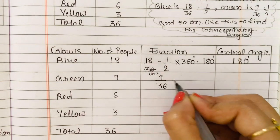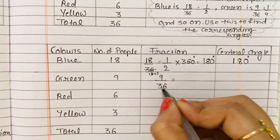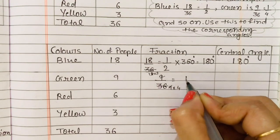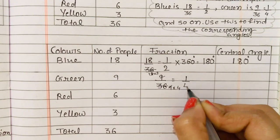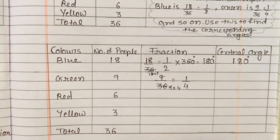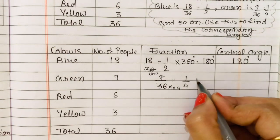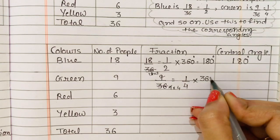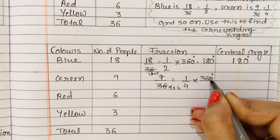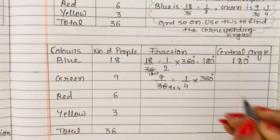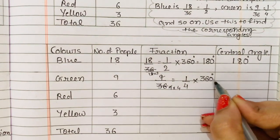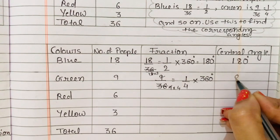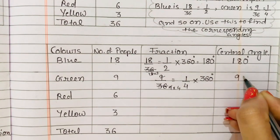If we cut it, nine fours are thirty-six, so nine and nine cancel. So here we multiply 1 upon 4 into 360 degrees. If we cut it, 360 divided by 4 gives 90 degrees.